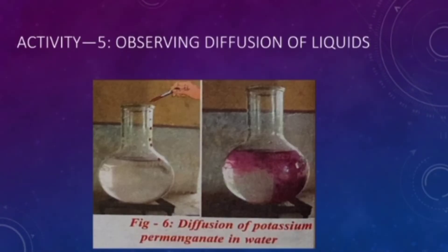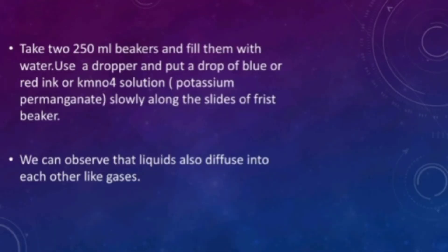Let's go to Activity 5: Observing the diffusion of liquids — diffusion of potassium permanganate in water. Take two 250 ml beakers and fill them with water. Use a dropper and put a drop of blue or red ink or KMnO4 solution — here KMnO4 means potassium permanganate — slowly along the sides of the first beaker. We can observe that liquids also diffuse into each other like gases.